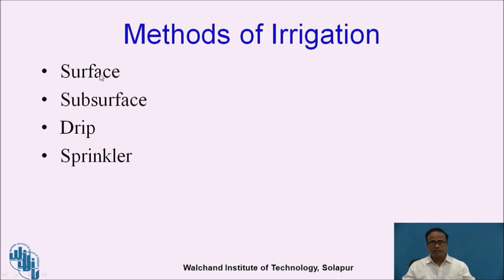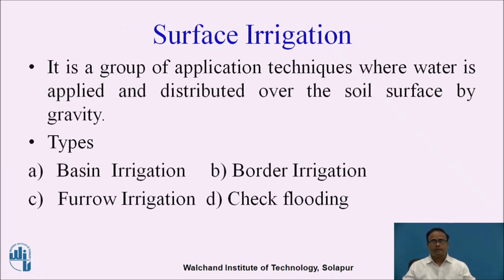The methods of irrigation include surface irrigation, subsurface irrigation, drip irrigation, and sprinkler irrigation. Surface irrigation is a group of application techniques where water is applied and distributed over the soil surface by means of gravity. No pumping action is required in case of surface irrigation; by means of gravity, water is directly applied on the ground.